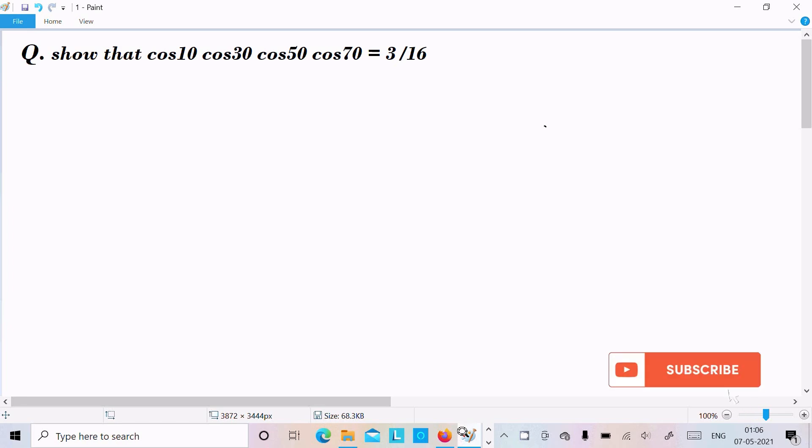Hi friends, in this video lecture I am going to prove that cos10 cos30 cos50 cos70 equals 3 by 16. So let's see the answer. First I am going to take here LHS, that stands for left hand side.